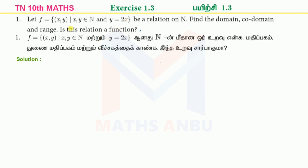Let f equal to {(x, y) : x, y belongs to natural numbers and y equal to 2x} be a relation on N. Find the domain, co-domain and range, and also prove whether the relation is a function.